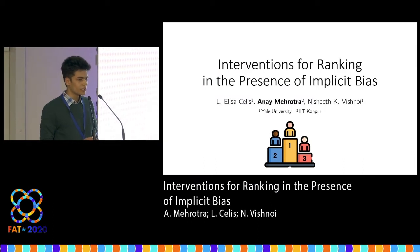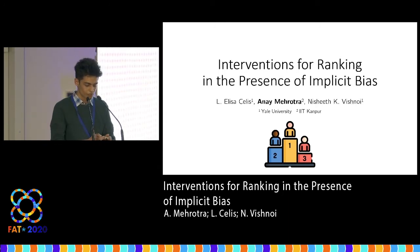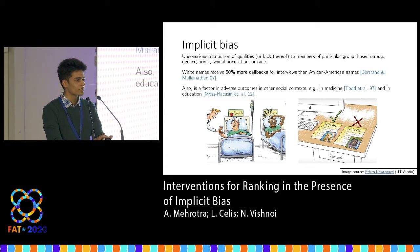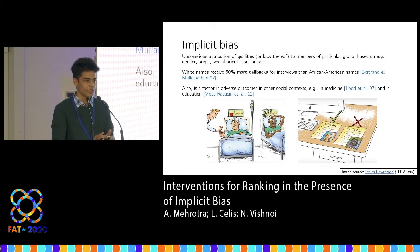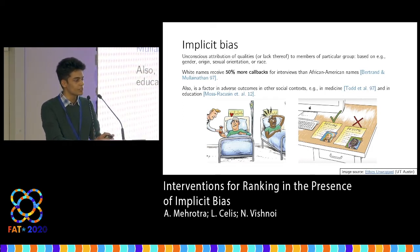I'll be talking about mitigating the adverse effects of implicit bias in rankings. This is joint work with my advisors Elisa Seles and Nishit Vishnoye at Yale University. Implicit bias is the unconscious association of certain qualities with members of some subpopulation, such as those based on race or gender. It is understood that implicit bias can be a factor in adverse outcomes against these subpopulations.